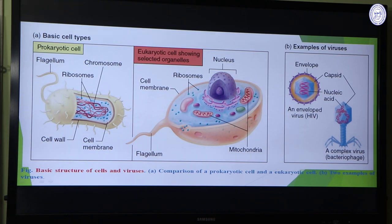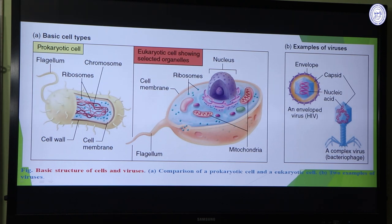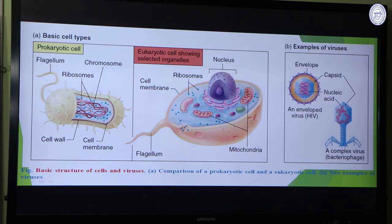In eukaryotic cells, the nucleus is well developed — the genetic material, that is DNA, is packed with histone proteins to form nucleosomes, which are condensed into chromosomes and confined within a membrane. Other cell organelles like mitochondria, ribosomes, and chloroplasts are present. Cell membrane is present in both prokaryotic and eukaryotic cells. In case of cell walls, they are present in fungal, algal, and plant cells with different compositions, but animal cells lack a cell wall.